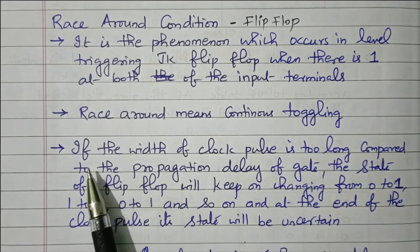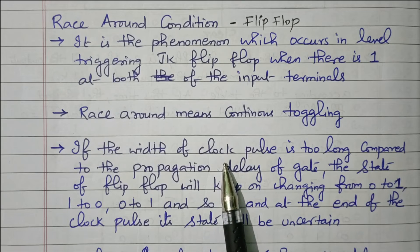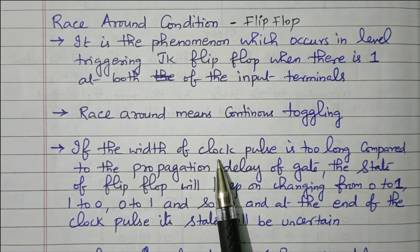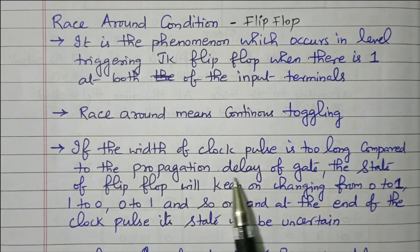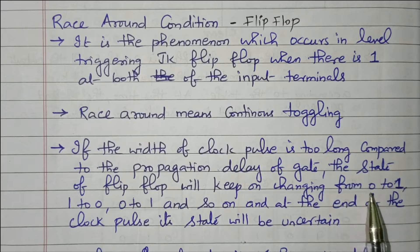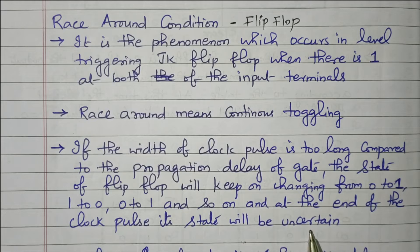Why is it toggling? If the width of the clock pulse is too long — because in a flip-flop, every clock pulse the status changes, it is a sequential circuit — when the clock pulse is applied, the state changes from one state to another. The width of the clock pulse is too long compared to the propagation delay of the gate, so the state of the flip-flop will keep on changing: from 0 to 1, 1 to 0, 0 to 1, and so on. At the end of the clock pulse, its state will be uncertain.